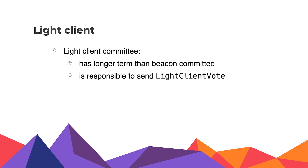In Phase 0, beacon committee members attest and propose beacon blocks. In Phase 1, there is a new responsibility for validators — to help light clients verify blocks properly. Besides the beacon committee, we will have another type of committee called the light client committee. They are responsible for sending aggregatable light client votes to the subnets, and they will have a longer term than the beacon committee, making them a more stable source in the P2P network.